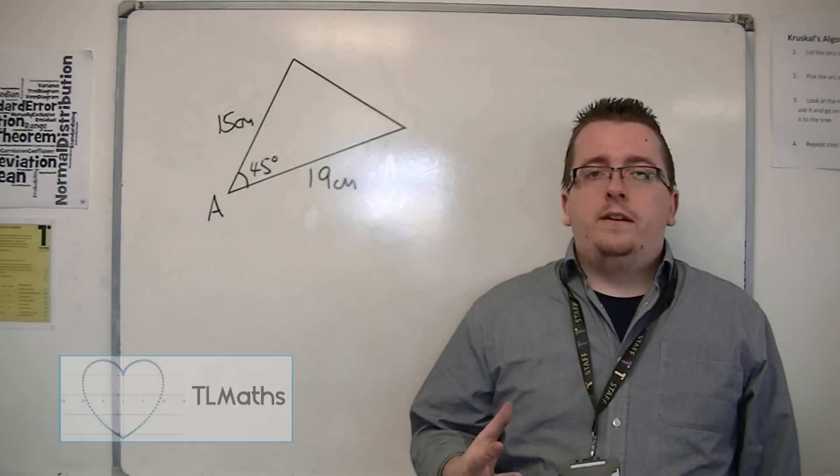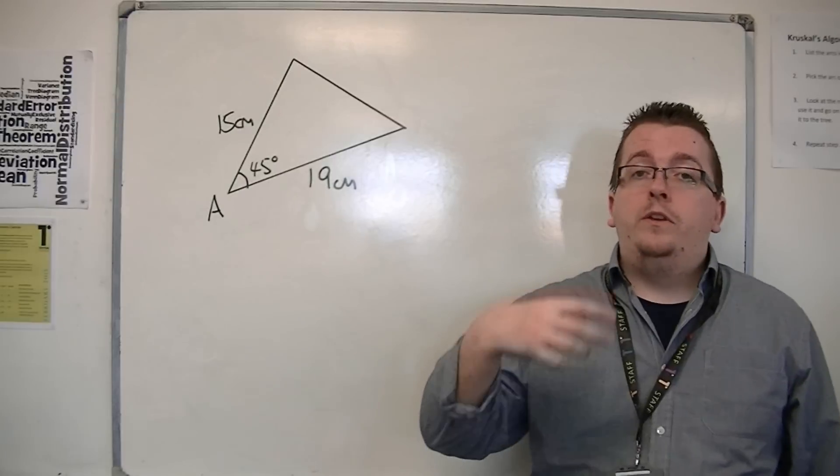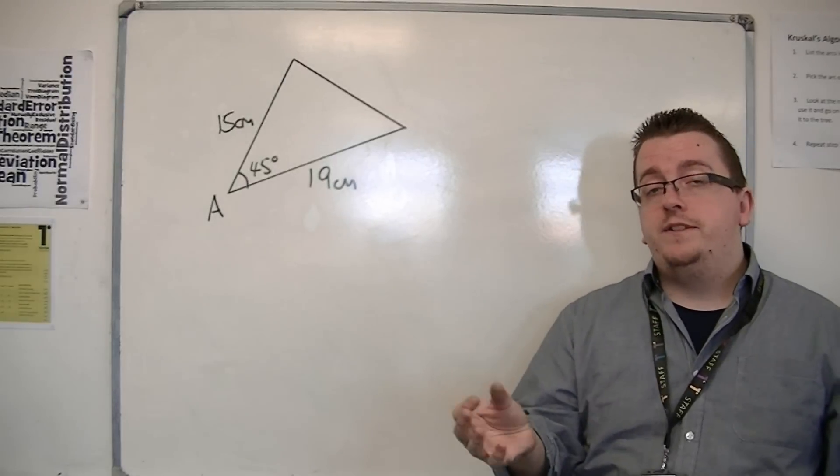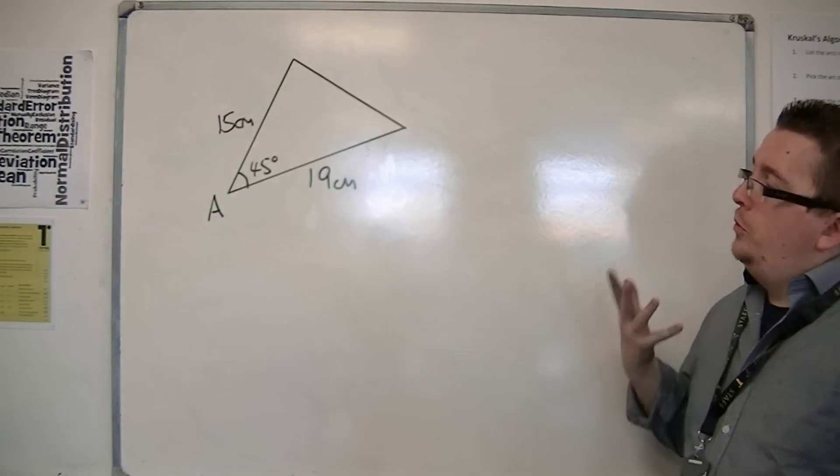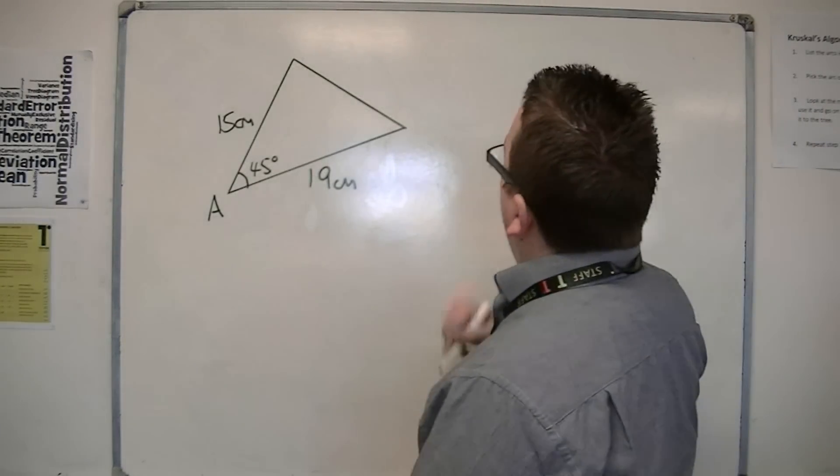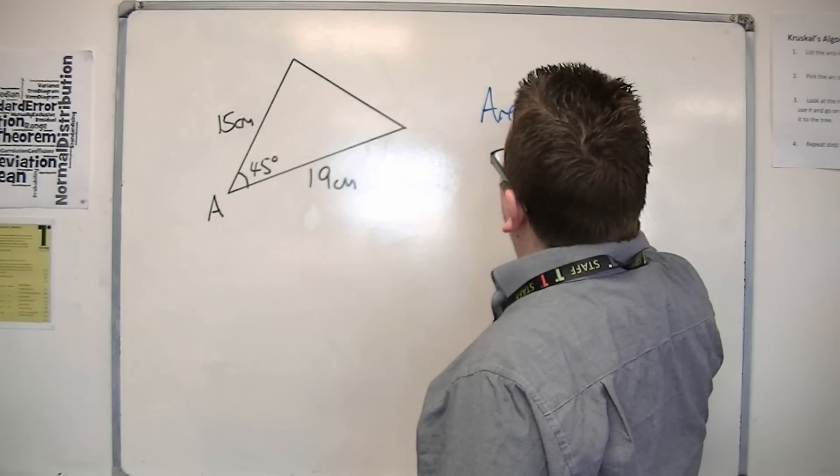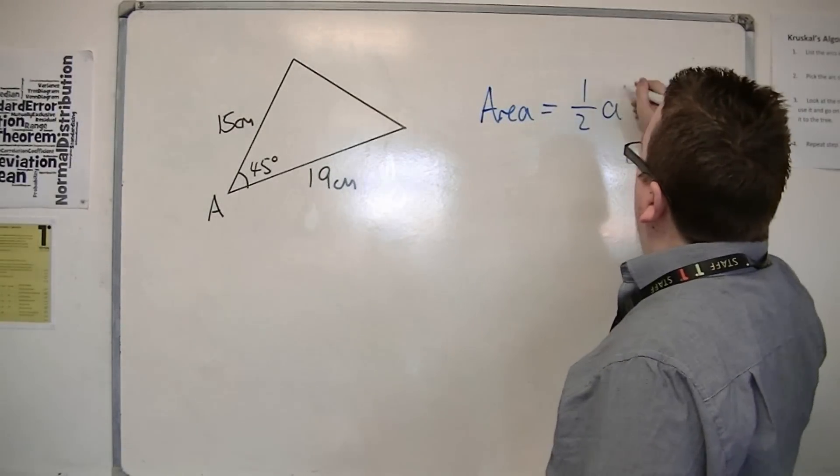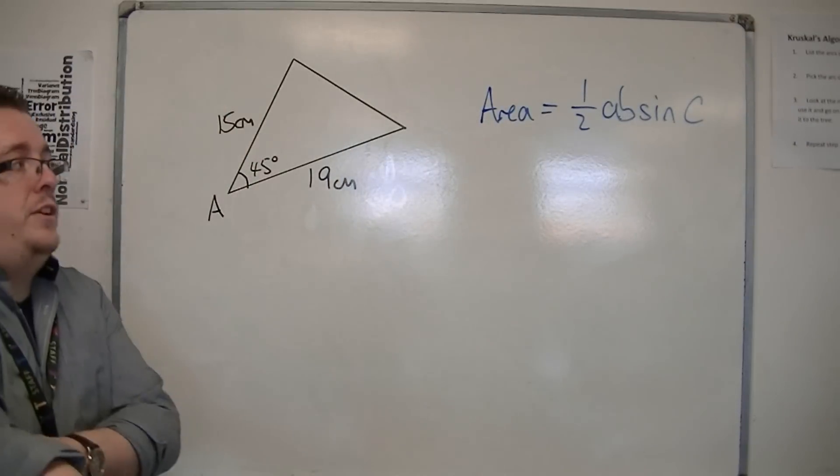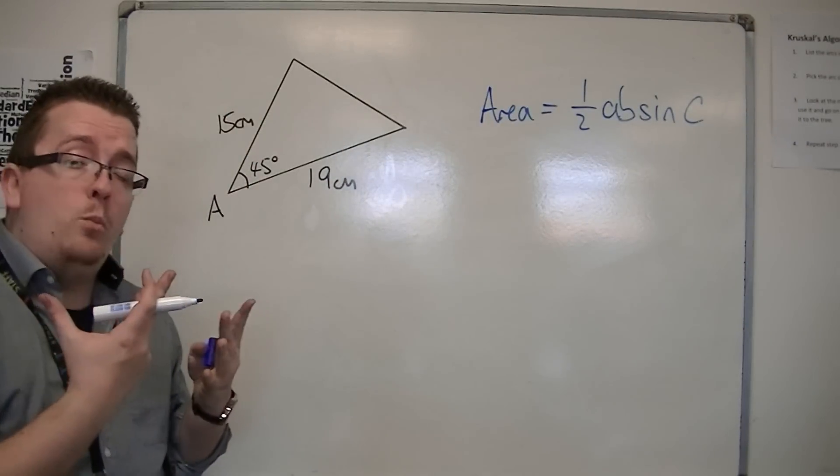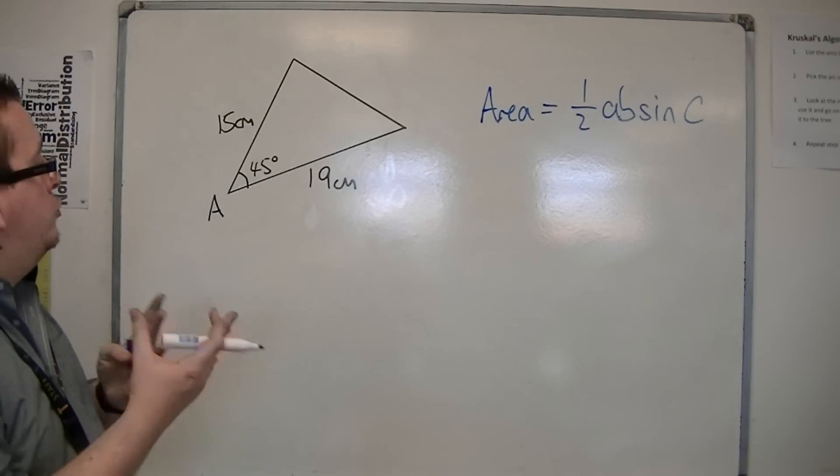Aside from the regular way of finding the area of a triangle using half base times height, that option isn't always open to you. And so there's another formula that you should remember, that is half a b sine c. So half a b sine c is the way of finding the area of a triangle.